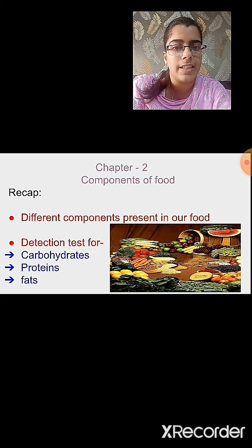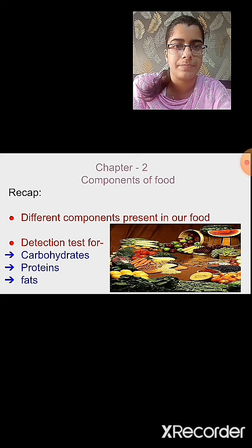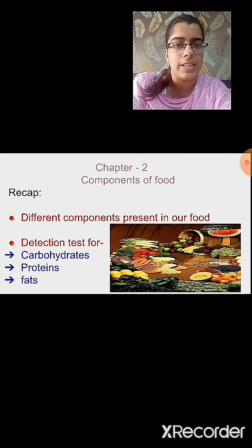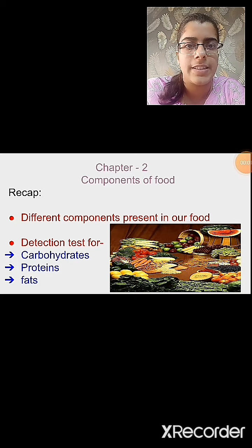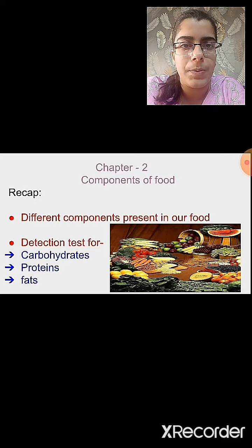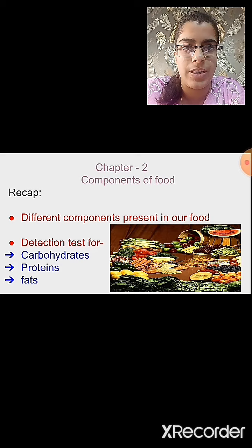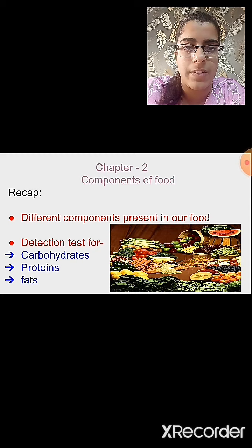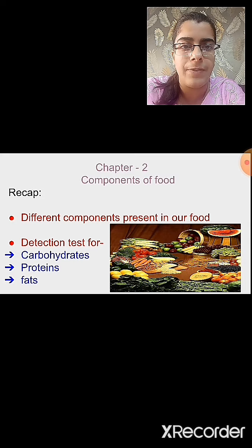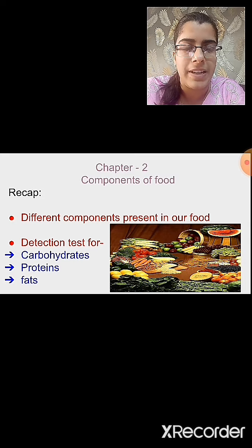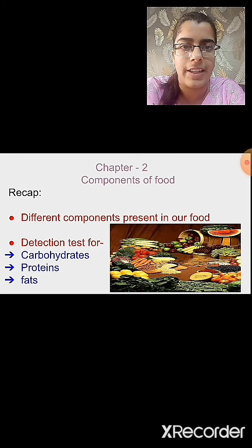Then we studied the detection tests for carbohydrates, proteins and fats, and the different chemicals used to carry out these tests. For carbohydrates, we use iodine solution. For proteins, we use copper sulfate and caustic soda solution. To confirm: in carbohydrates, we observe blue-black color; in proteins, we observe violet color. For fats, if we see a translucent patch on a piece of paper, that confirms that fat is present in the food item.